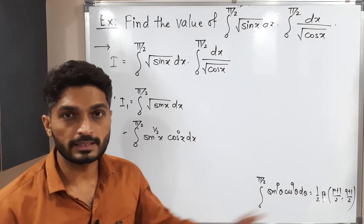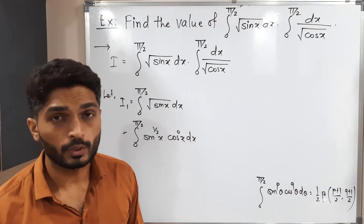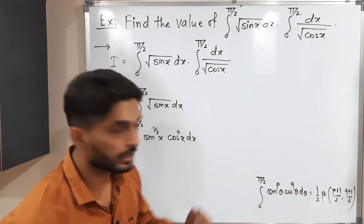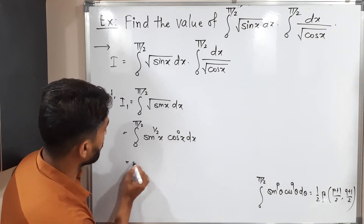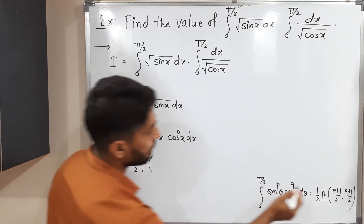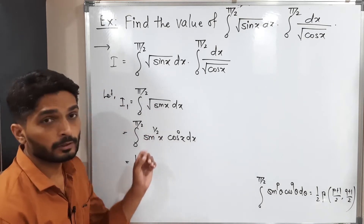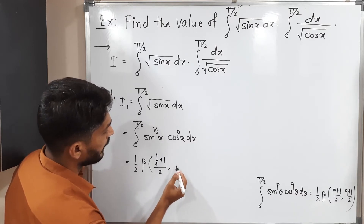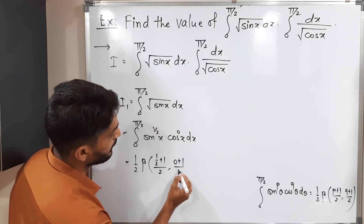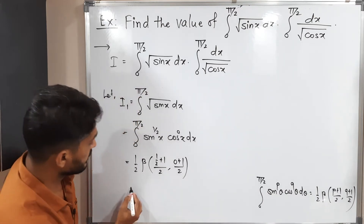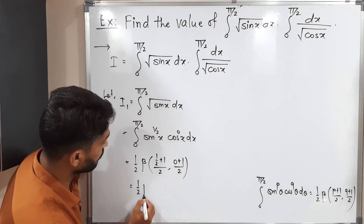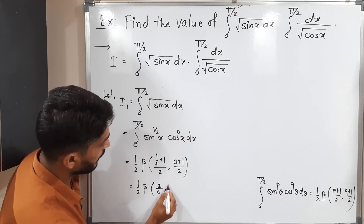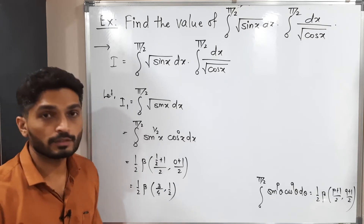Comparing this integral with the formula, we can see that p = 1/2 and q = 0. So we can write I1 = (1/2) · Beta((1/2 + 1)/2, (0 + 1)/2) = (1/2) · Beta(3/4, 1/2). This is the value of the first integral.